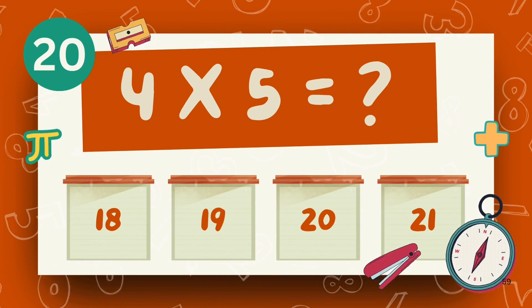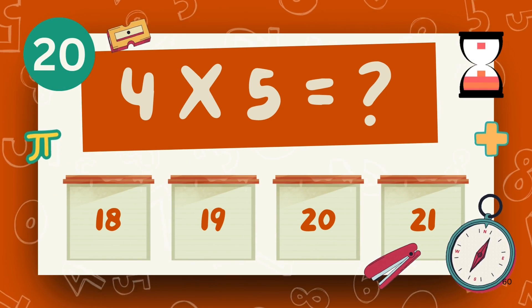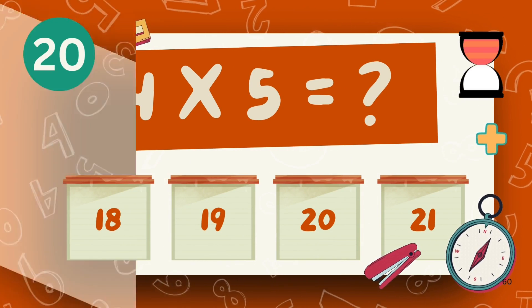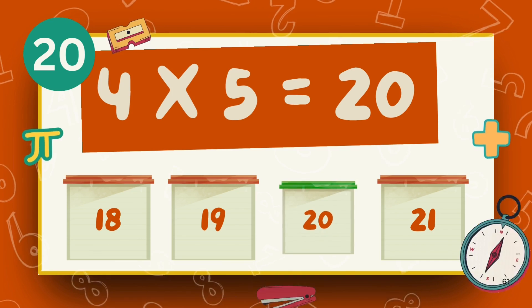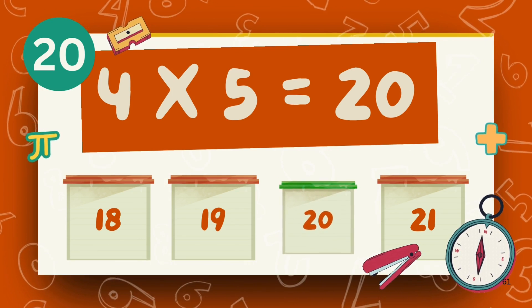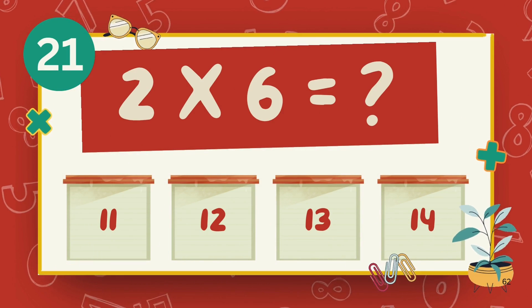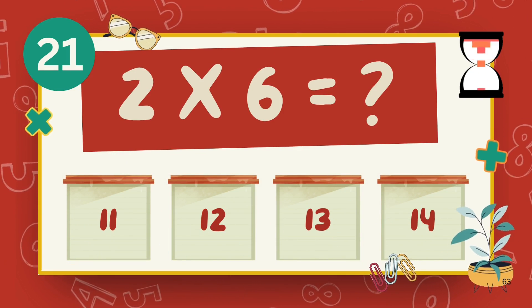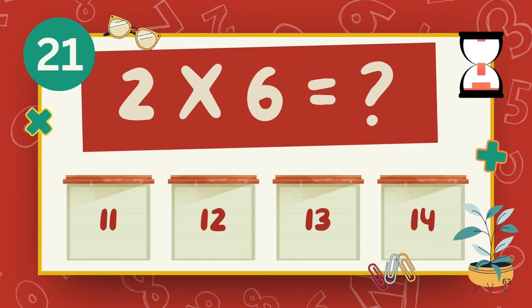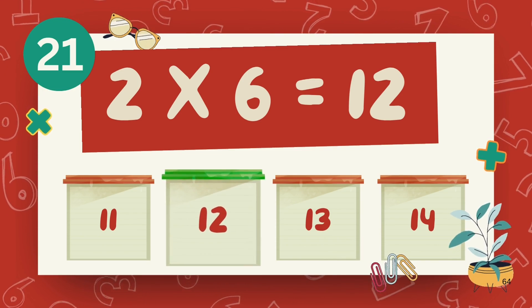What is 4 multiply 5? The answer is 20. What is 2 multiply 6? The answer is 12.